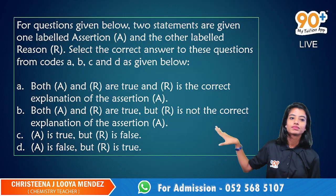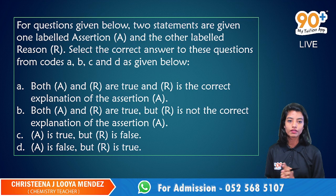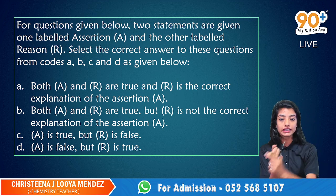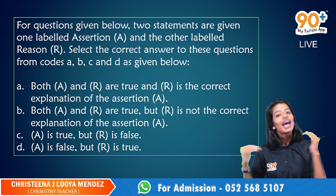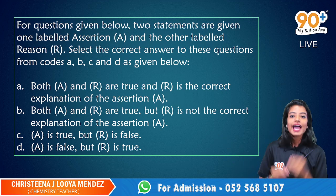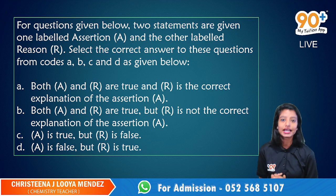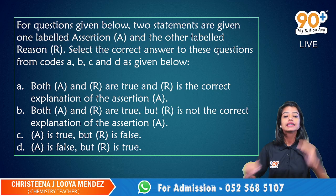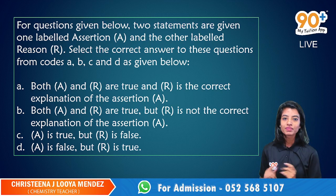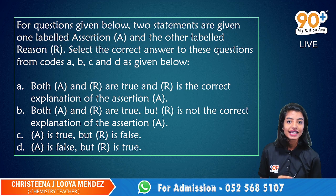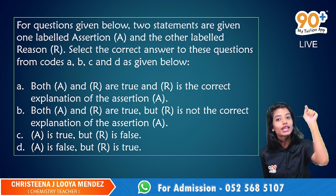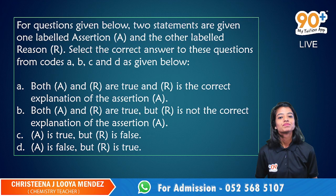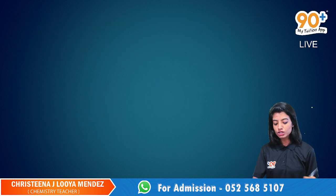Now let's get into the instructions given over here. As we know, they will provide an assertion followed by a reason. All you have to do is just read the assertion and reason as well, and check whether the given statements are true or not. Finally, you have to check whether the given reason is the correct explanation for the assertion or not. Choose the correct option given over here and one mark is in your pocket. Shall we do it then? So, let's get into the first one.